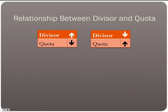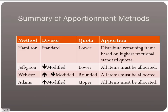When trying to pick a modified divisor, understand the relationship between divisor and quota: if you increase the divisor, you're dividing by a larger number and your quota will go down. If you pick a smaller divisor, your quota will go up. So for Jefferson, Webster, and Adams, if we allocated too many items, our divisor was too low and we need to raise it. If we didn't allocate all the items, we need to lower the divisor so the allocation goes up.